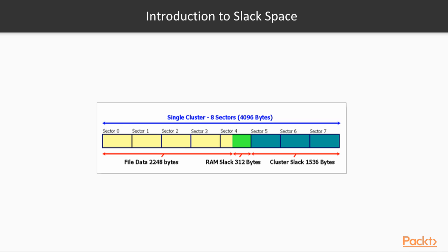For example, as we can see in this diagram, if a file size occupies only 2 kilobytes of the last block, and the block size is 4 kilobytes, it uses only the first 2 kilobytes, and the remaining 2 kilobytes of the block are unused and form the file slack space.